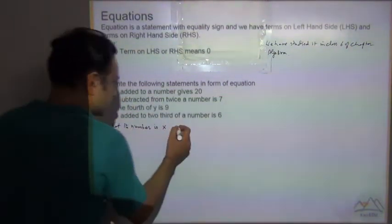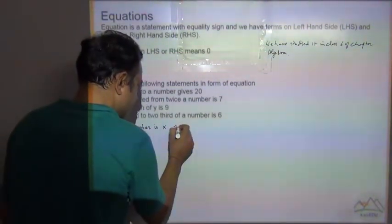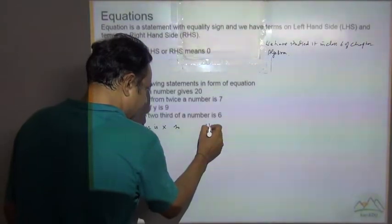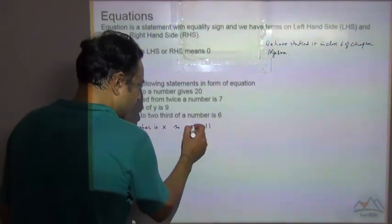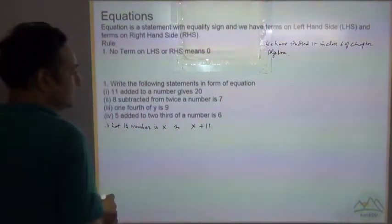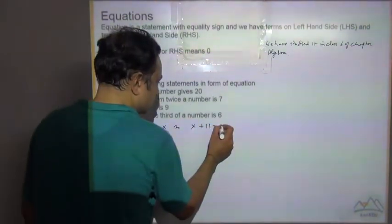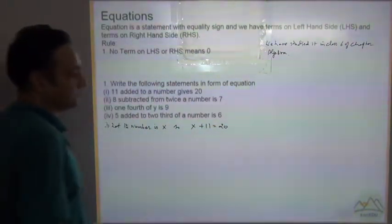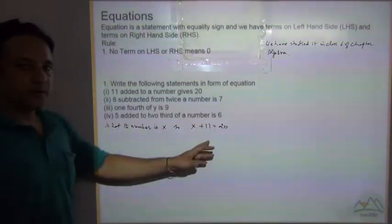11 is added to the number. Number is x. So this gives 20. So this is our equation.